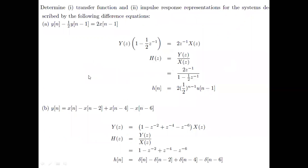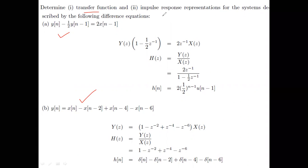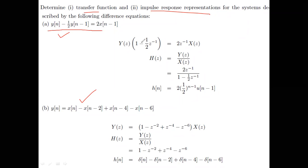Let us now see similar problems where we are given the difference equation and want both the transfer function and the impulse response representations. Take the Z-transform of the difference equation, collect terms, and form the ratio H(z) = Y(z)/X(z).